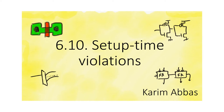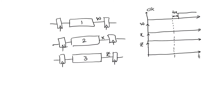We talked about slack in the previous video but we did not discuss the possibility of there being negative slack. So let's look at this pipeline. It consists of three paths — one, two, and three — each lying between a pair of registers. The nodes W, X, and Z are the output nodes of each of the combinational paths one, two, and three, so they are the inputs of the second register in each path.